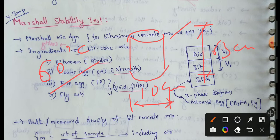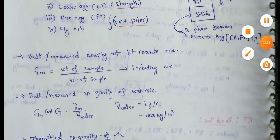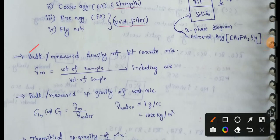This test is used to determine the air void percentages, mineral aggregate void percentages, and the voids filled with bitumen percentages. We will discuss all of them step by step. First: bulk or measured density of bituminous concrete mix, denoted as rho m. Density equals weight divided by volume.